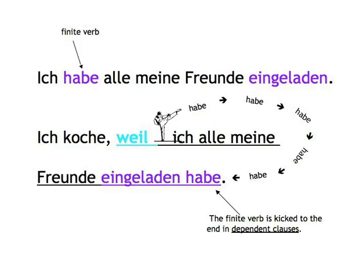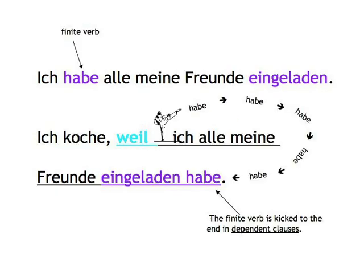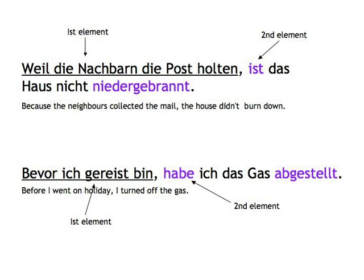And do you remember what happens to the finite verb in dependent clauses after a subordinating conjunction? Yes — the finite verb is kicked to the very end. So: Ich habe alle meine Freunde eingeladen. Ich koche, weil ich alle meine Freunde eingeladen habe. Weil die Nachbarn die Post holten, ist das Haus nicht niedergebrannt. Bevor ich gereist bin, habe ich das Gas abgestellt.